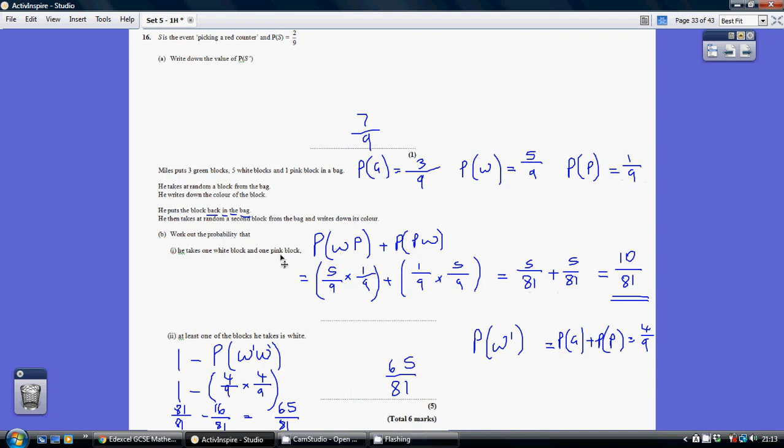The other way we can end up with one white block and one pink block is to first of all get a pink and then a white. So the probability of a pink and then a white. A pink, a ninth, times a white, 5 ninths. So it's another 1 times 5, 9 times 9, which is 5 over 81. So overall, when you add fractions with the common denominator, you just add the numerators. So that's 10 over 81.